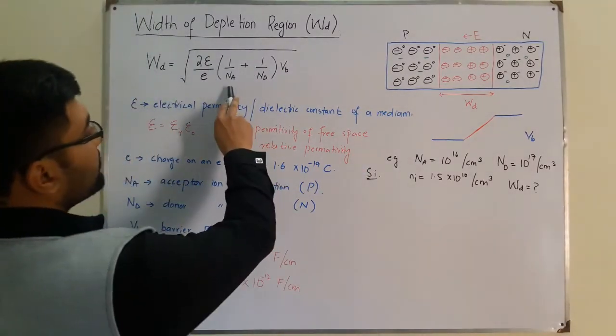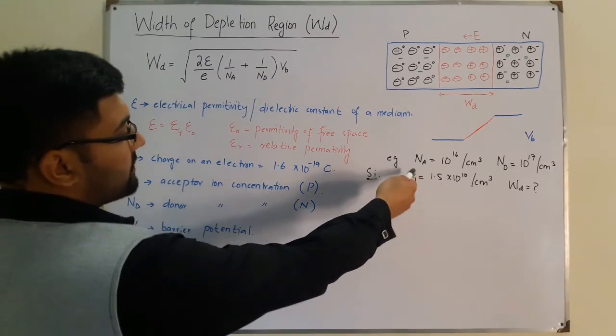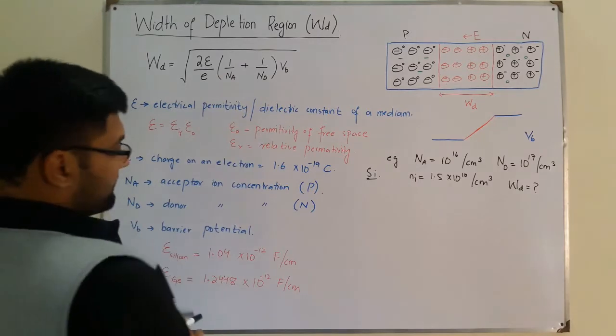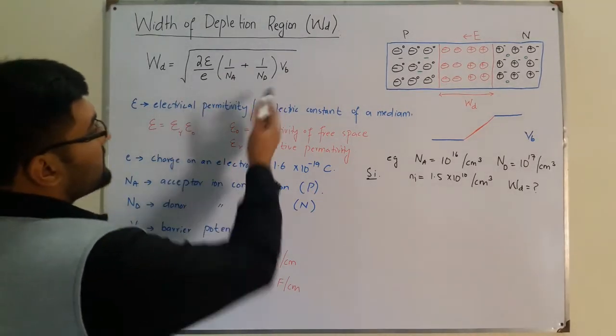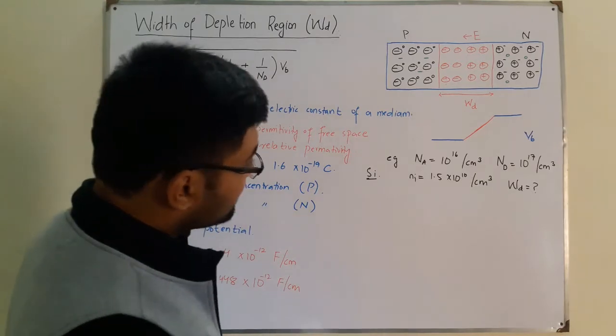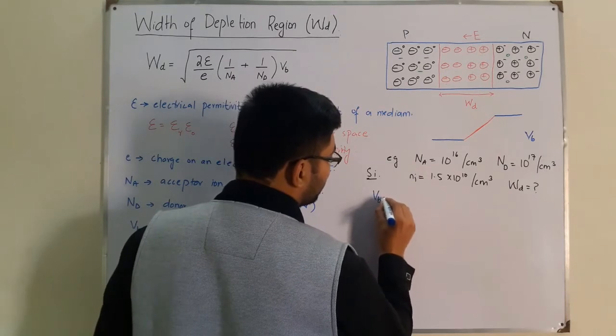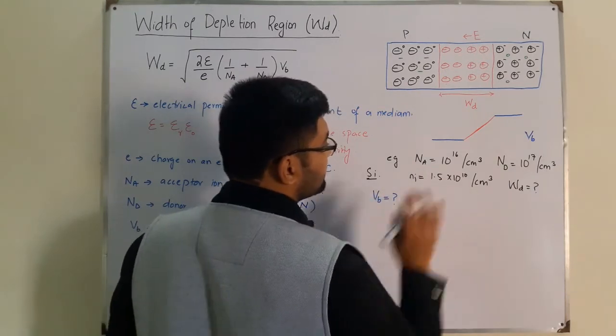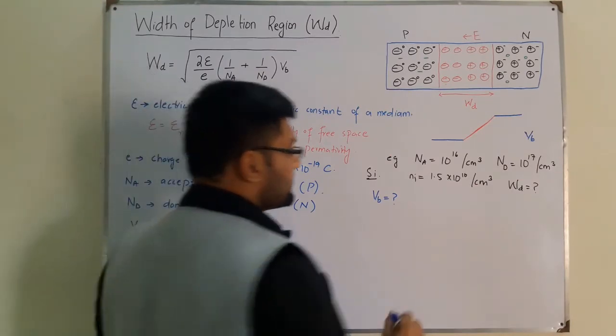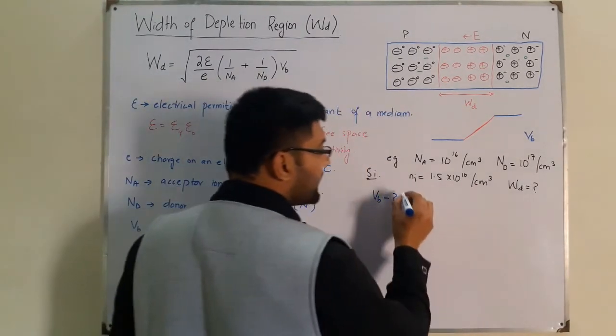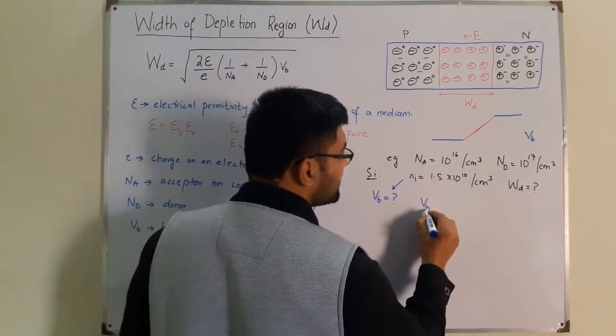So NA we have from the formula, ND we have from the formula. Epsilon I have written over here, which you need to remember. E we know too. Now VB is unknown. While I was saying we don't require NI, we do require NI to find VB. If we find VB, VB is equal to VT, which was 26 millivolts at room temperature.